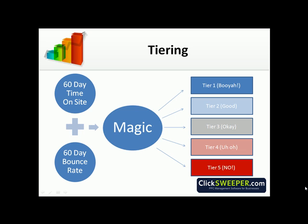Tier 1 being the best, tier 5 being the worst. It then bids up a small percentage on tier 1 and tier 2. Tier 3 it maintains, and tier 4 and 5 it demotes.